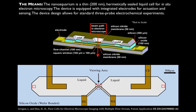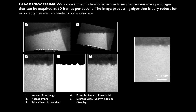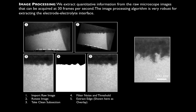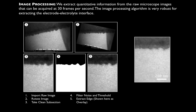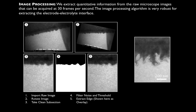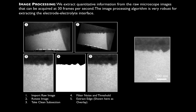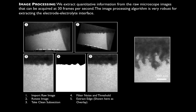We have four electrodes built in so we can do standard three-electrode electrochemical experiments. When we take our videos we get very nice qualitative data — these very beautiful videos — but we need a way to quantify what we are seeing. So we've developed an image processing technique that's completely unsupervised and non-parametric, meaning once I put the video in and do rotation and cropping, it just runs for however long the video is.